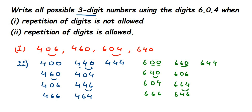So in total, we got nine combinations with 4 in the beginning and nine combinations with 6 in the beginning — giving 18 total combinations when repetition of digits is allowed. I hope this question is clear. If you have any questions or doubts, you can drop a comment. Thank you so much for watching.